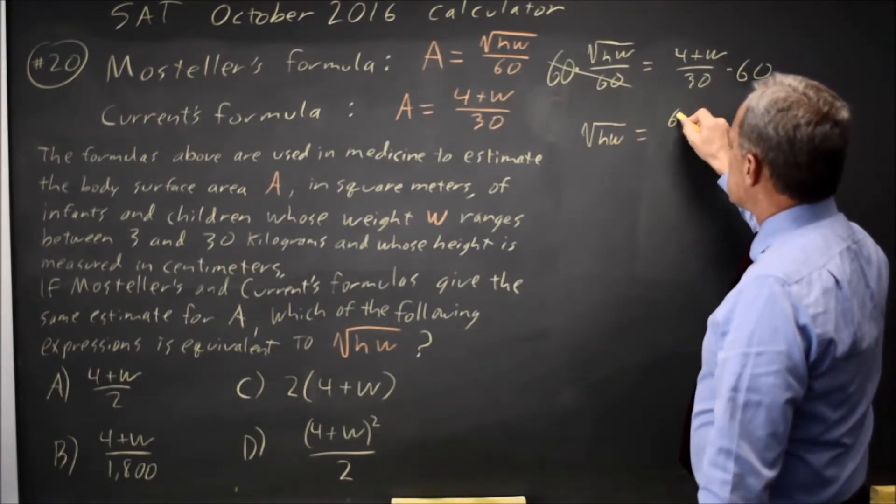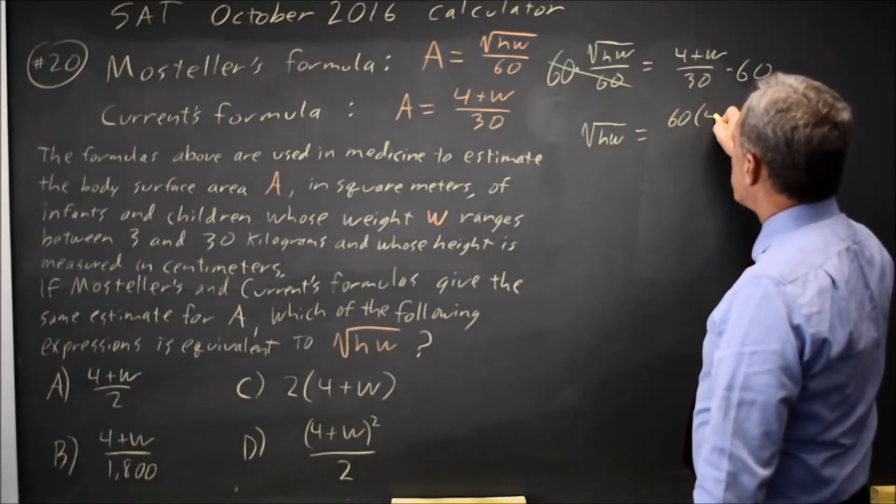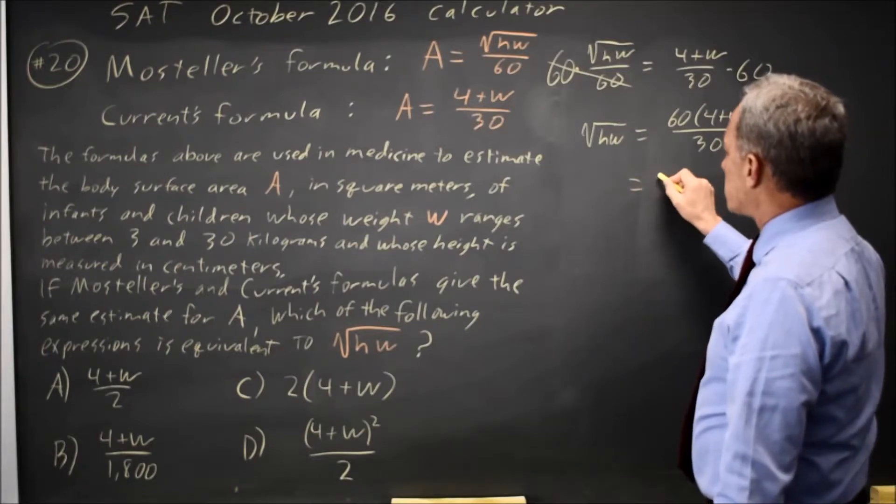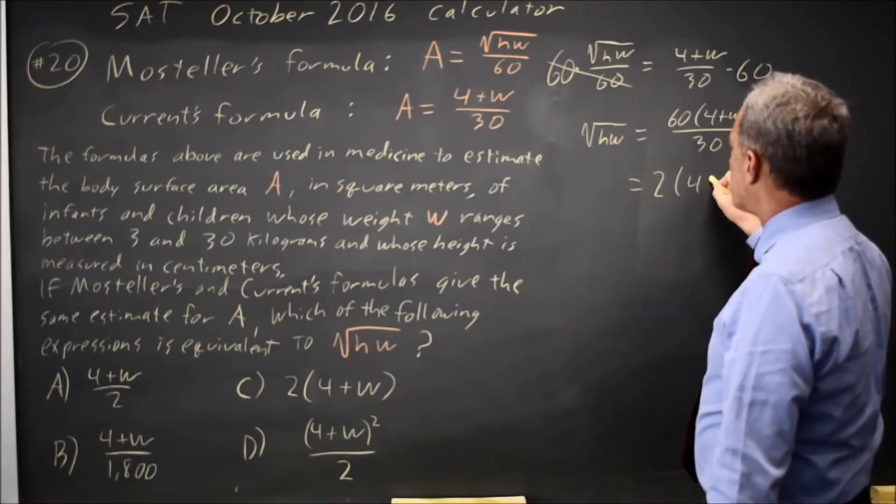And that's equal to 60 times 4 plus W over 30. 60 over 30 is equal to 2, so it's twice 4 plus W.